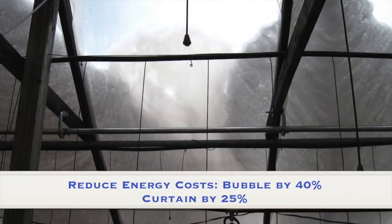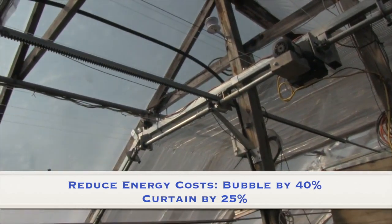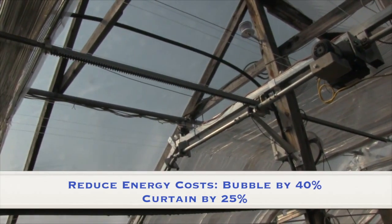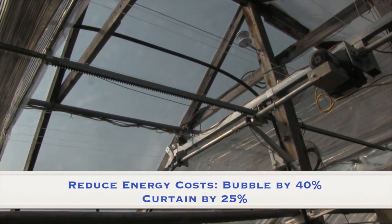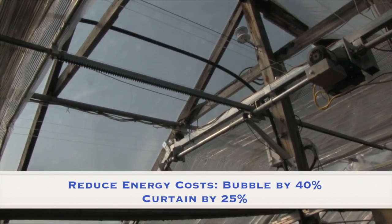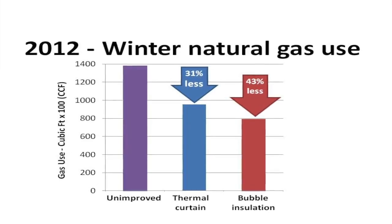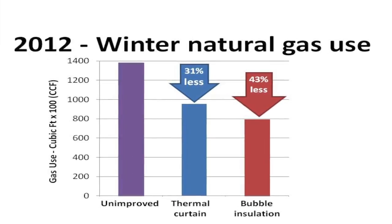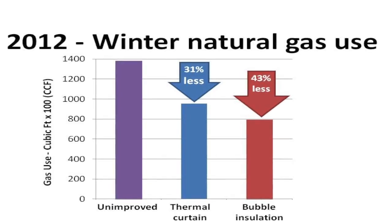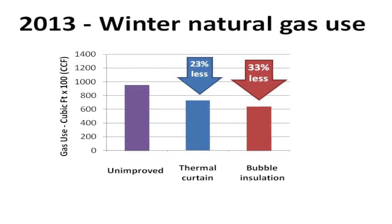Use of the bubble insulation technology can reduce energy consumption for heating by approximately 40% depending on the outside ambient temperatures, and the energy or thermal curtain by 25 to 30% compared to a standard double layer plastic hoop house. These systems are fully automated and can operate by themselves. Either system can also be used to shade and cool the greenhouse in the summer months, adding to their versatility and cost effectiveness.